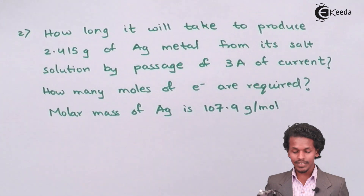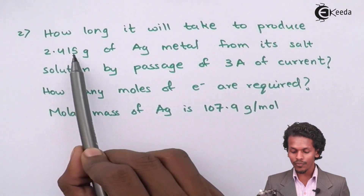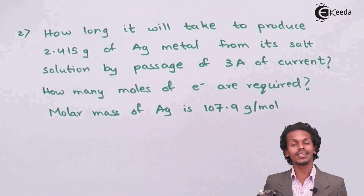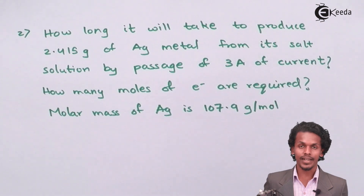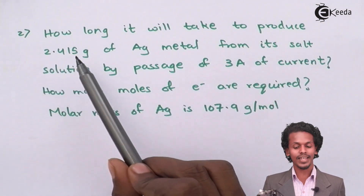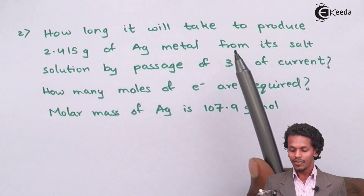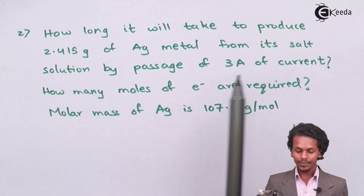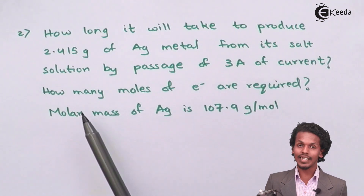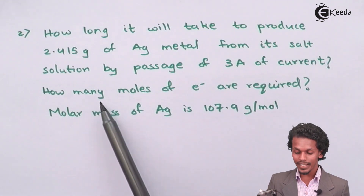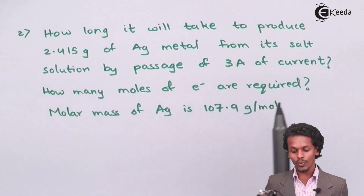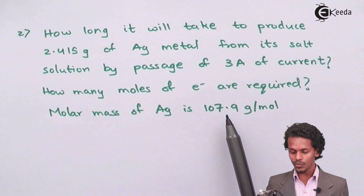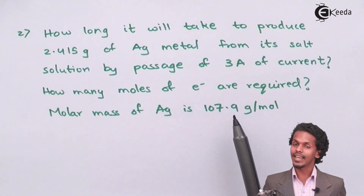The question asks: how long will it take to produce 2.415 grams of Ag, that is silver metal, from its solution by passage of 3 amperes of current? An additional question is: how many moles of electrons are required? The molar mass of Ag is given as 107.9 grams per mole.